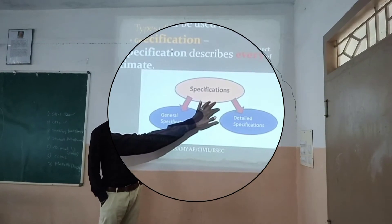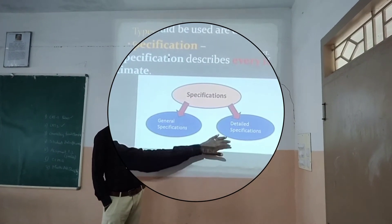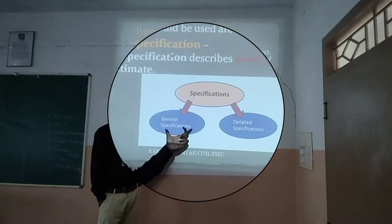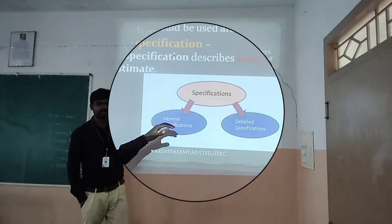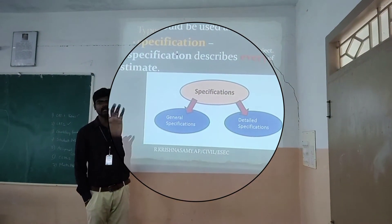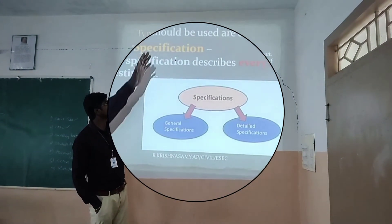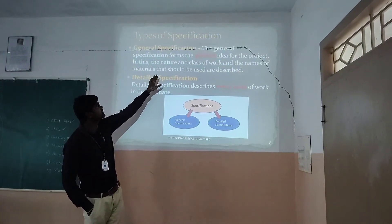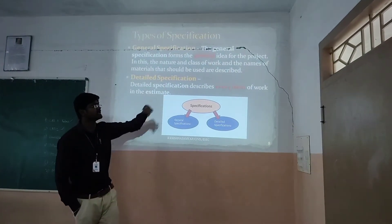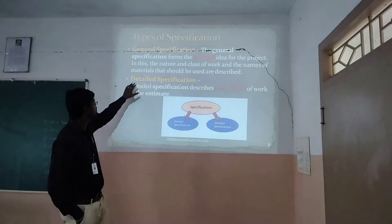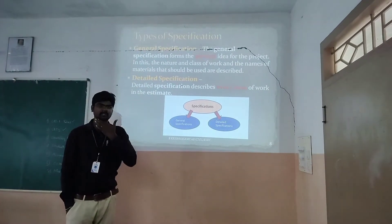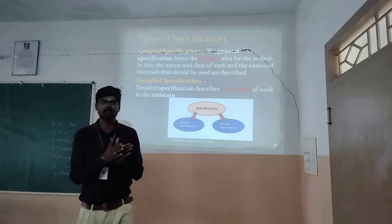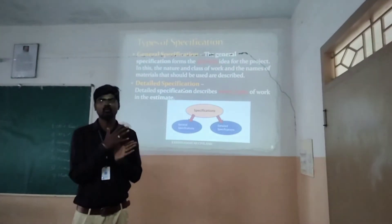Types of specifications: specifications can be categorized into two types. Number one: general specifications. Number two: detailed specifications. In general specifications, a general idea of the building is given. It covers the nature and class of work and the names of the materials that should be used. It describes the overall outline of the project or building.